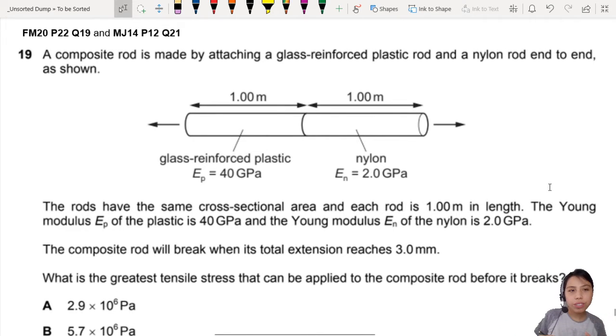Here's a video about composite rods. There's actually two places where this past year paper appears: one in February-March 2020 and again in May-June 2014, a very old one. So you see they like to ask this almost exactly the same question, so if it comes out again, be ready.